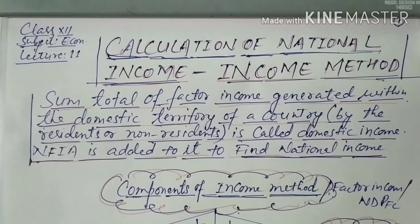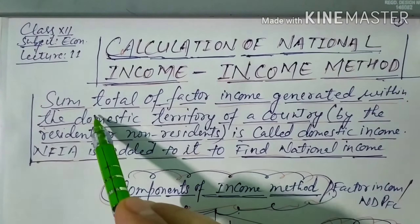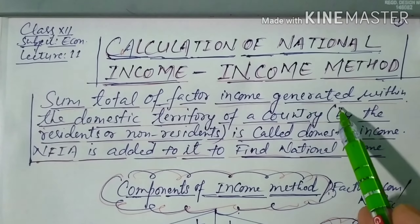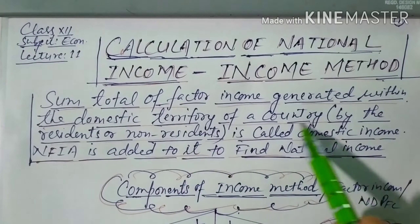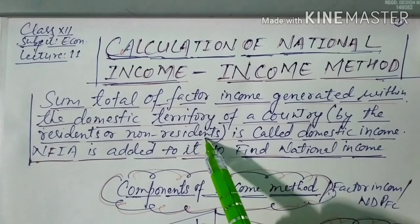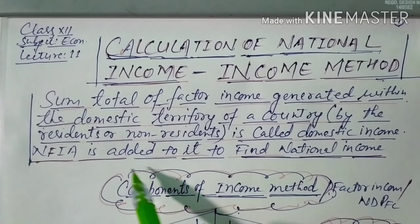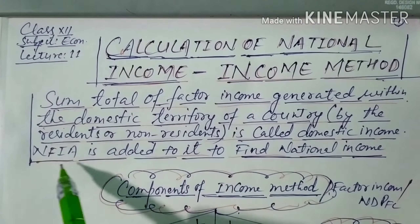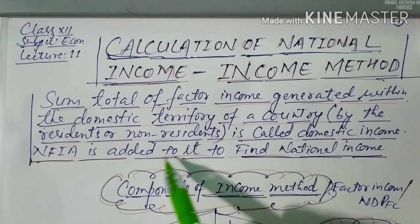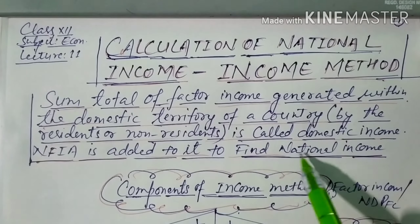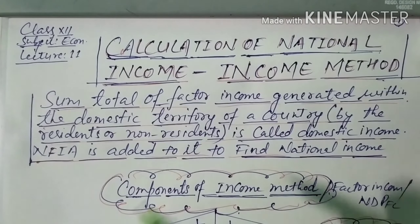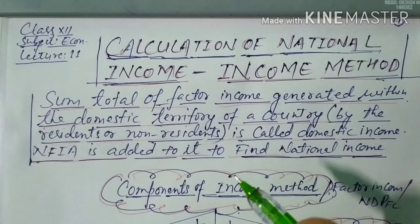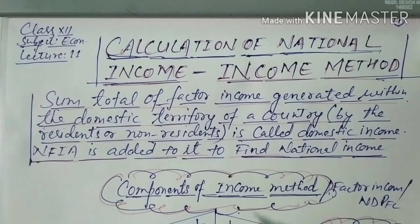The sum total of factor income generated within the domestic territory of a country by residents or non-residents is called domestic income, that is NDPFC. If we add net factor income from abroad to NDPFC, we get the national income. Now let us see what the components of the income method are.